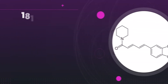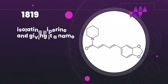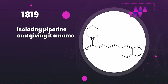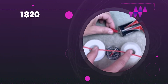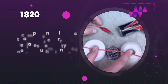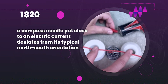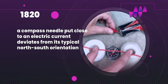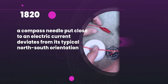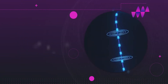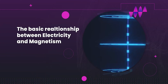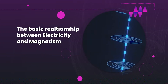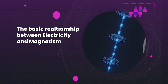In 1819, Ørsted did the groundbreaking work of isolating piperine and giving it a name. In 1820, he reported that a compass needle placed close to an electric current deviates from its typical north-south orientation. This discovery showed that an electric current can produce a magnetic field, and hence established the basic relationship between electricity and magnetism.